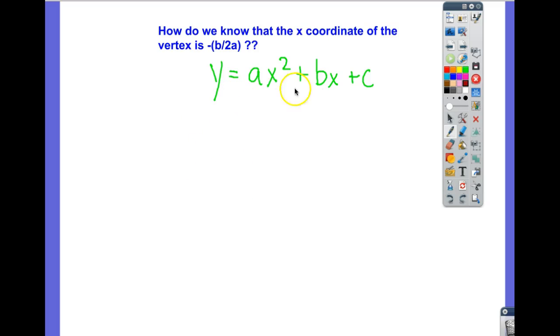By now you've heard that if we have standard form of a quadratic equation, we know that the x coordinate of the vertex is at negative b over 2a. But how do we know that? How do we know that we can just take b and put it over 2 times a, make it negative, and that's the x coordinate?